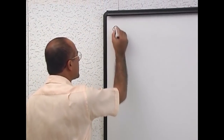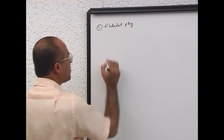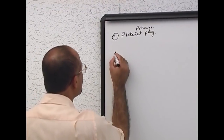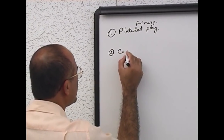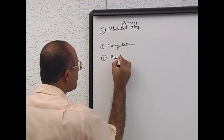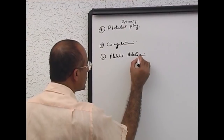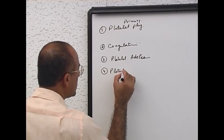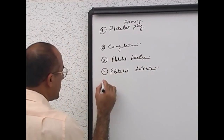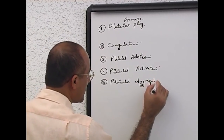For example, the terms which should be clear: number one, you should know what is meant by platelet plug — primary platelet plug. What is the concept of primary platelet plug? Then you must know what is meant by coagulation, platelet adhesion, platelet activation, and platelet aggregation. These terms should be very, very clear by the end of the lecture.